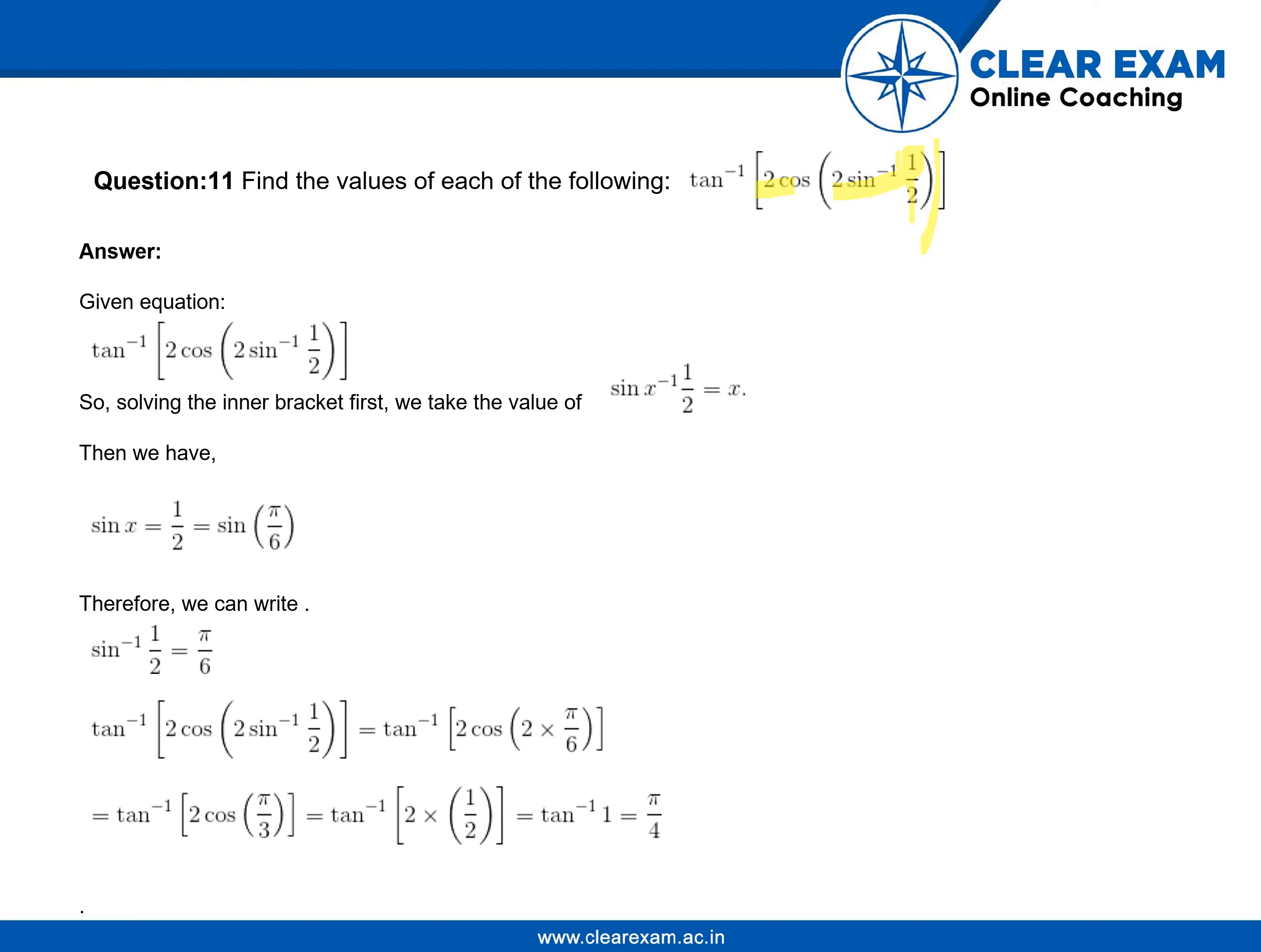It is given that tan inverse of square bracket 2 cos, small bracket 2 sin inverse of half. Sin inverse of half.